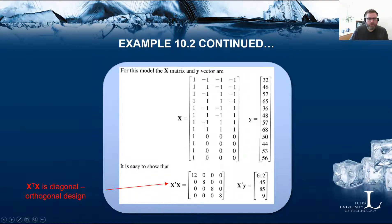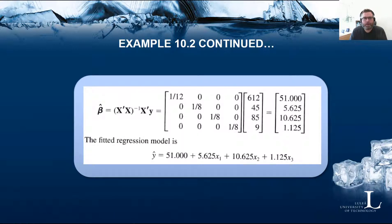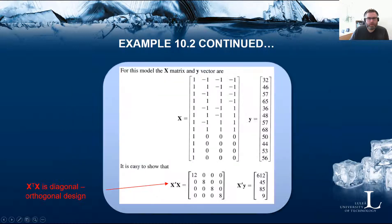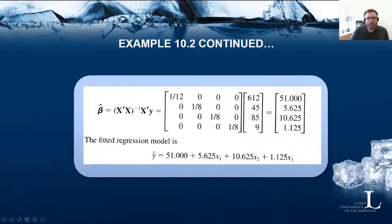To estimate the beta values — beta 0, beta 1, beta 2, and beta 3 — we use the formula: the inverse of X transpose X times X transpose Y. Notice that the inverse of a diagonal matrix is very simple to calculate: it is simply the reciprocal of the diagonal values, so 1/12, 1/8, 1/8, 1/8.